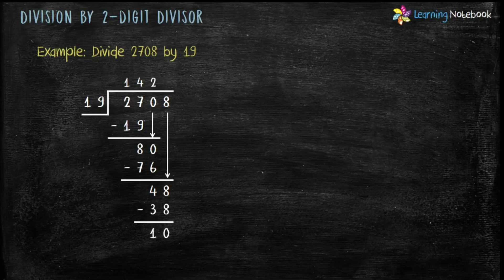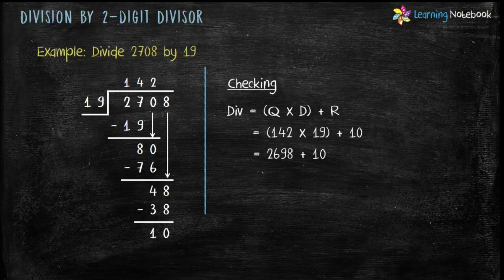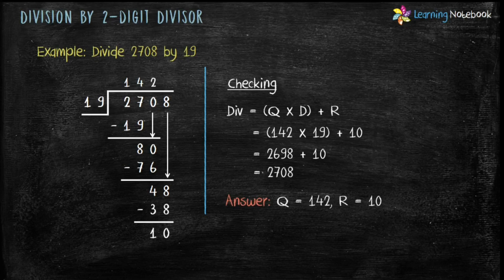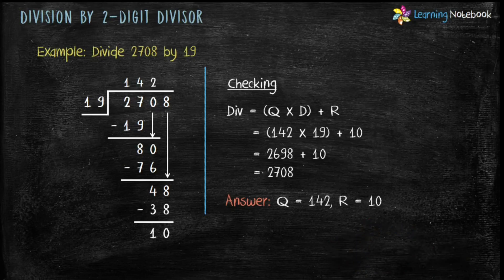Therefore quotient is 142 and remainder is 10. Now let's check this answer. Dividend equals quotient into divisor plus remainder. Putting the values: 142 into 19 plus 10. 142 into 19 equals 2698, and 2698 plus 10 equals 2708, which is equal to the given dividend. Therefore the answer — quotient 142, remainder 10 — is correct. In this video we learnt division by 2-digit divisor by estimating the quotient. Do practice this method. Thanks for watching. If you like this video, hit the like button, subscribe to our channel Learning Notebook, and press the bell icon. Thank you, bye-bye!